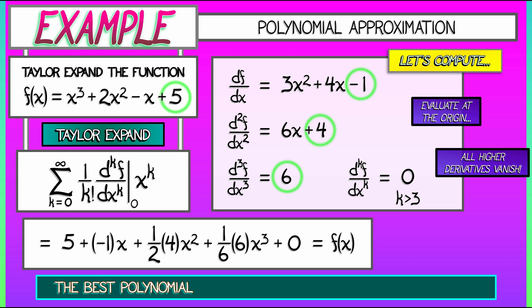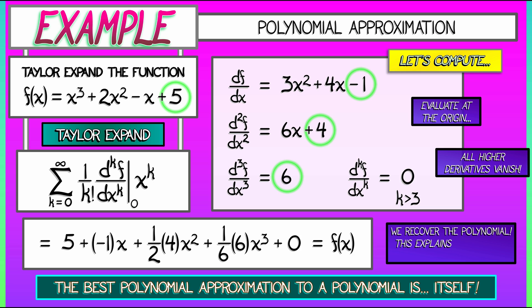This is great. The best polynomial approximation to a polynomial is itself. And the fact that we recover this polynomial sort of explains a little bit of why the Taylor formula is the way it is. Some students wonder, why do you have that 1 over k factorial in the denominator there? Well, if you take the k-th derivative of a monomial of the form x to the k, what do you get? That's worth thinking about a little bit.